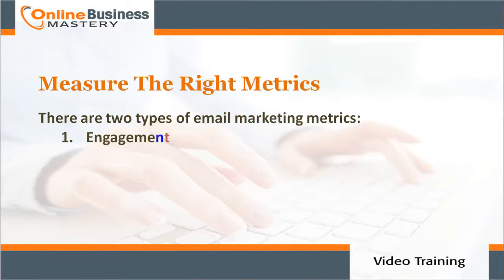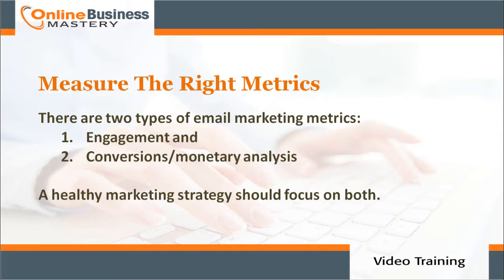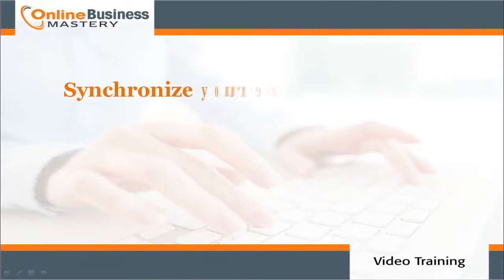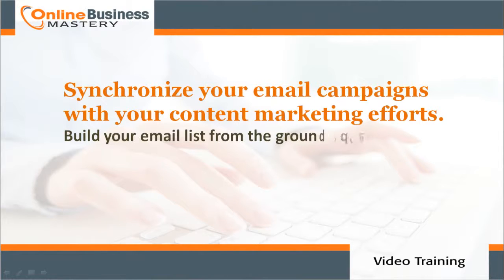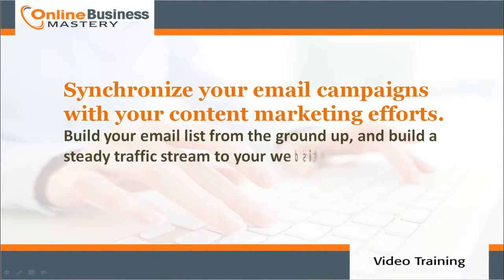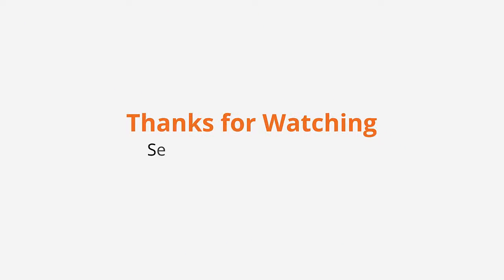Measure the right metrics. There are two types of email marketing metrics: number one, engagement, and number two, conversion and monetary analysis. A healthy marketing strategy should focus on both. Synchronize your email campaigns with your content marketing efforts, build your email list from the ground up, and build a steady traffic stream to your website. Thank you for watching — we'll see you in the next video.